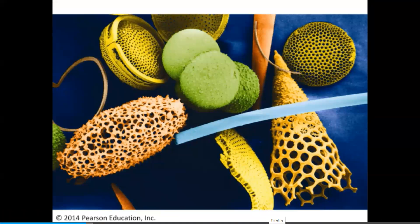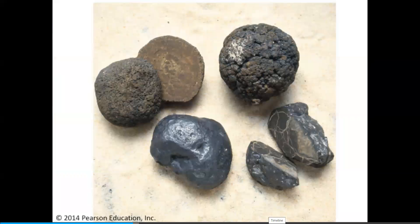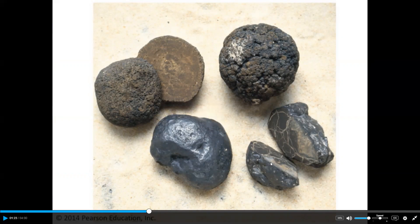Biogenous sediments are made from particles from living things — most frequently plankton, shown here as marine microfossils. Their shells are hard, composed of silica or calcium carbonate. Hydrogenous sediments form directly through chemical precipitation from seawater, in sharp contrast to terrigenous and biogenous. Terrigenous sediments consist of weathered rock from the land carried into the ocean; larger particles settle near shore on the continental shelf and slope, while smaller particles can be carried thousands of kilometers by ocean currents.